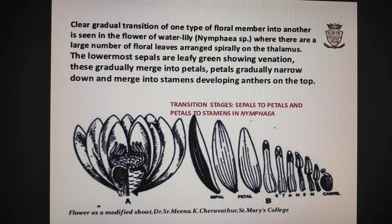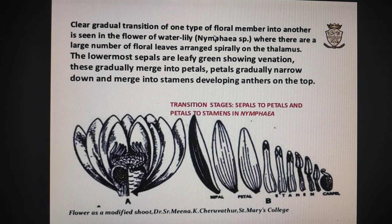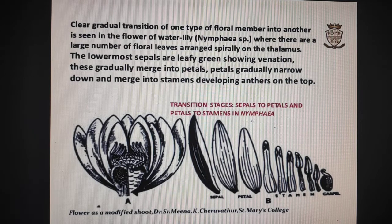In the previous lecture, there is a gradual transition of one floral member into another. So you can see here, sepal is converted into petal and petal is converted into stamen and then carpel. This transition is clearly seen in Nymphaea. This is what we have studied earlier.